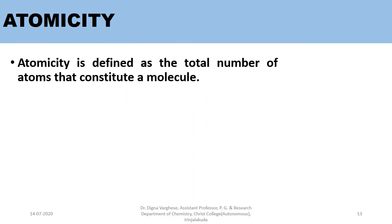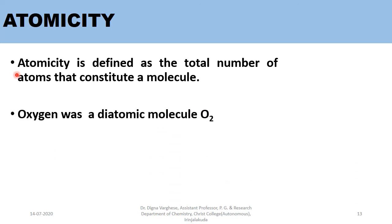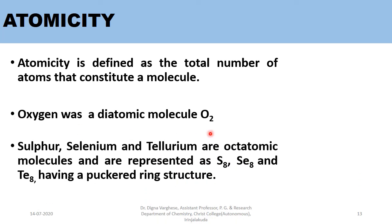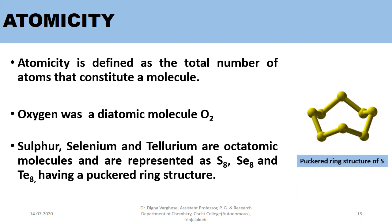Atomicity is defined as the total number of atoms that constitute a molecule. Oxygen is a diatomic molecule (O2) with atomicity 2. Sulphur, selenium, and tellurium are octaatomic molecules with atomicity 8, represented as S8, Se8, and Te8, having a puckered ring structure.